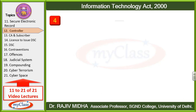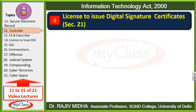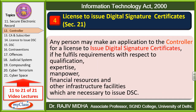Fourth function: License to issue digital signature certificates — Section 21. Any person can make an application to the controller for a license to issue digital signature certificates. Koi bhi vyakti, koi bhi company, controller ke paas application laga sakti hai ki hamein digital signature certificate ko issue karne ka license diya jaaye — if he fulfills the requirement with respect to qualification. Agar woh company ya woh vyakti qualification ke prati saari requirements ko fulfill karta hai,